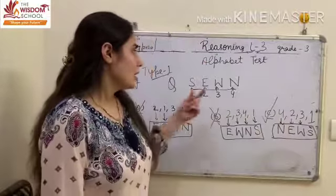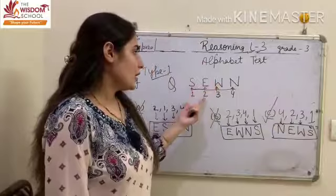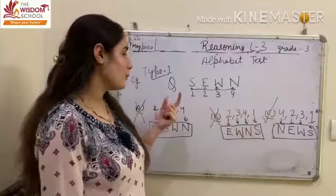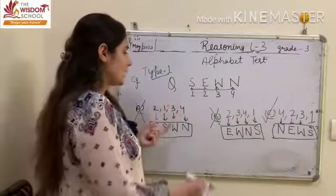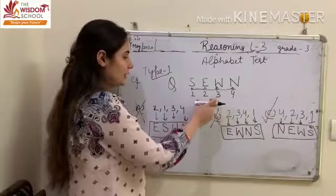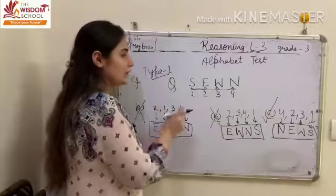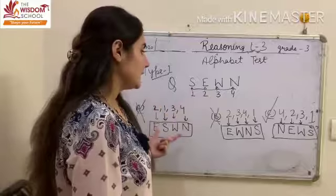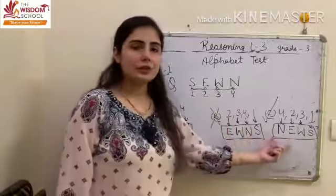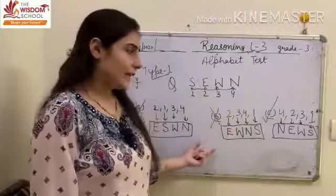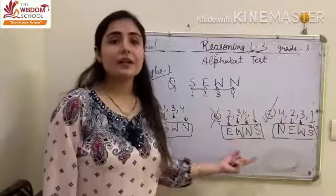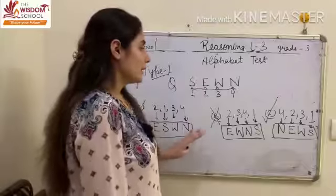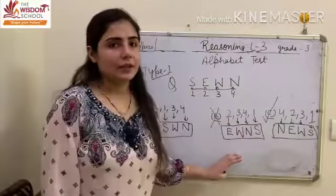Again, I will repeat children. Question में आपको word given होगा. उसके कुछ numbering given होगी. Options में भी आपको numbers given होंगे. Then, आपको numbers को आपको check करना है question में से और आपको number के नीचे वो particular alphabet को check करके लिखना है. And at last, जब आपके words form हो जाएंगे, then, आपको देखना है कि उन words में से which word is the meaningful word in English. So, that option will be the correct option.